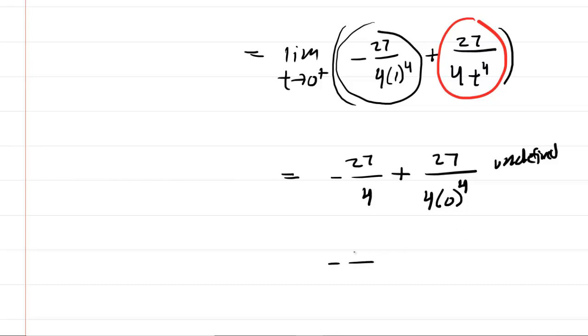So in essence, what happens here is in the denominator, we're going to get a very small number, because we're taking a very small number that's close to zero, and we're raising it to the power of four. And then we have 27 on top.